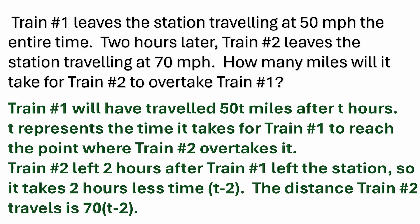Train number one will have traveled 50 times t miles, or 50t miles, after t hours. T represents the time it takes for train number one to reach the point where train number two overtakes it. Train number two left the station two hours after train number one, so it takes t minus two hours for train number two to get to that point. The distance train number two travels is represented by 70 times the quantity t minus two.